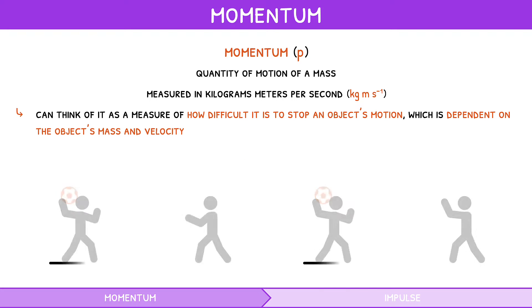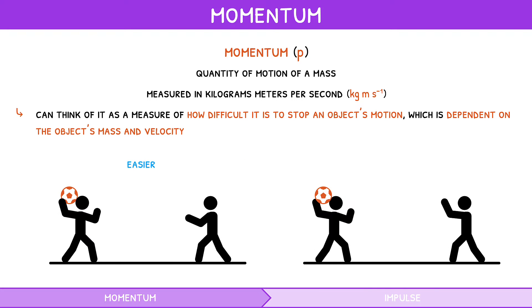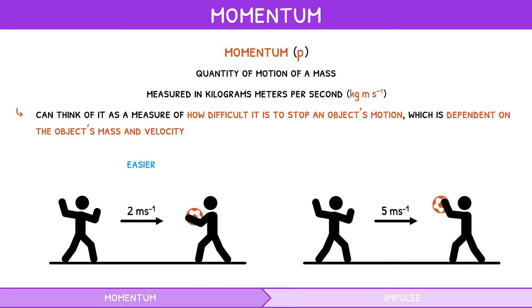Equally, it is much easier to catch a football moving at 2 meters per second than a football moving at 5 meters per second. The formula for momentum is mass times velocity.